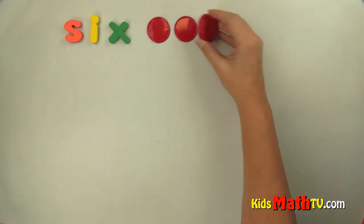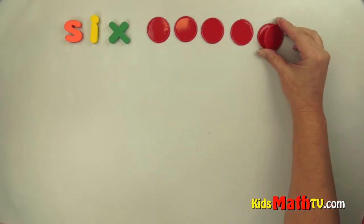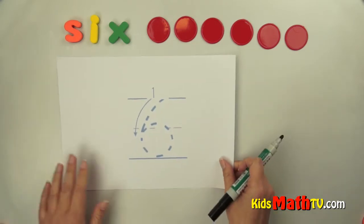One, two, three, four, five, six. There are six objects. To write the number six,